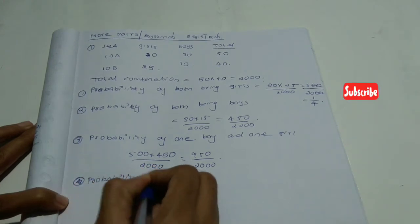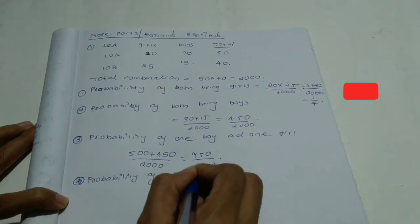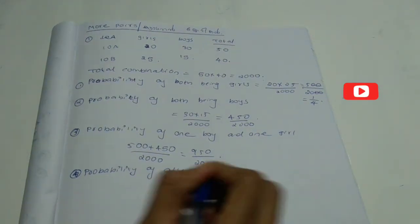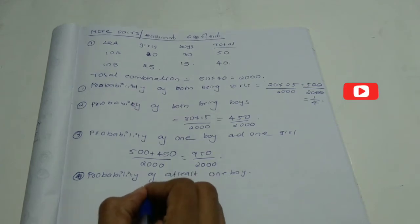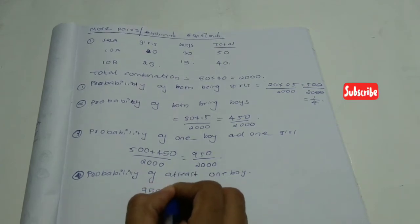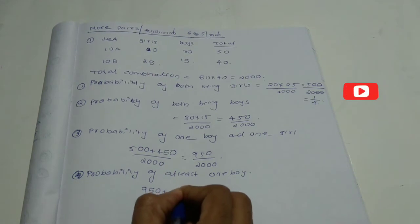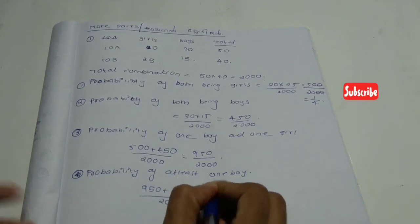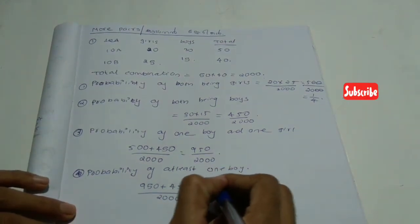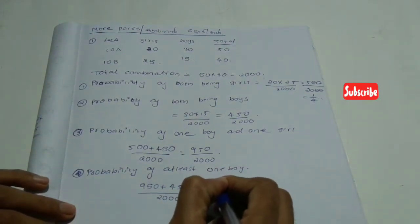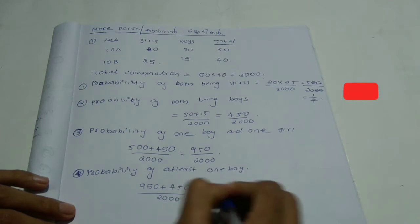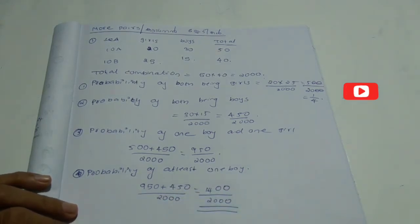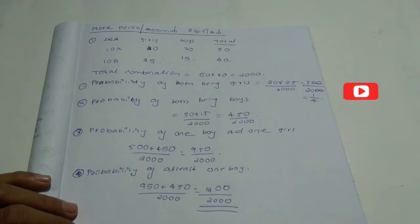Probability of at least one boy. That is 950 plus 415 divided by 2000, which gives 1400 divided by 2000.